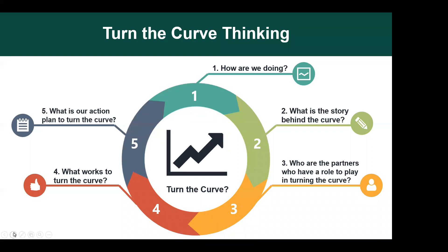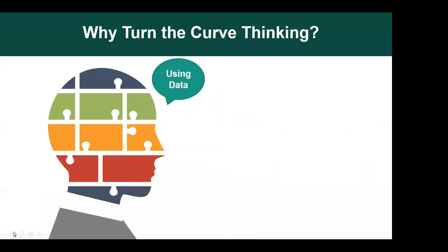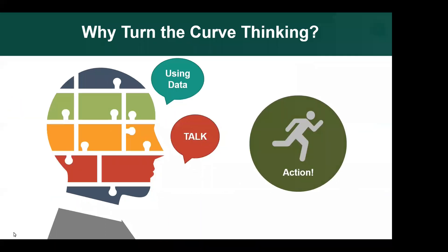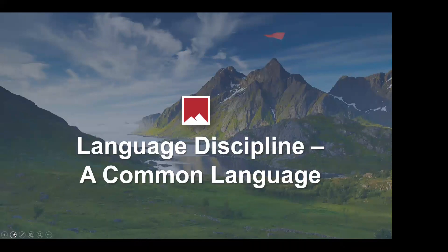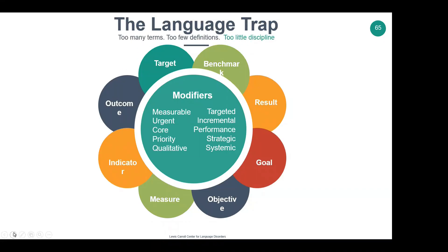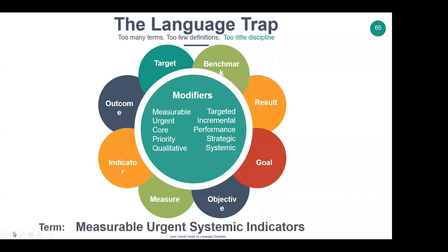To help use data effectively, we need what we call turn the curve thinking — a process to help organizations use data to move from talk to action. But it starts with a key commitment to language discipline. We've all seen these many words in our work: measurable, urgent, systemic, indicators. Mark Friedman says that if people put three or more of these words together in a sentence, they have no clue what they're talking about. So Mark decided to bring a common set of terms — just four of them — that everyone agrees to use, so we're clear what we're talking about as we work between partners, agencies, stakeholders, and the community.